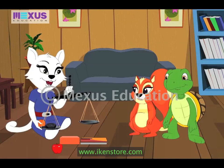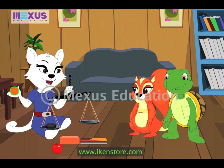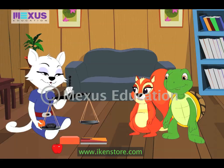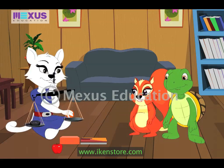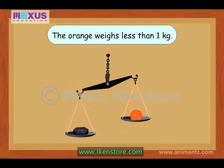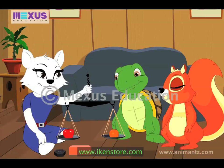That's correct. Now let's measure the weight of the orange. Can you guess it, Amber? It must be less than one kilogram. Let's check. The pan with the orange is above the one kilogram weight. So the orange weighs less than one kilogram. Very good.